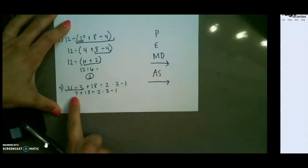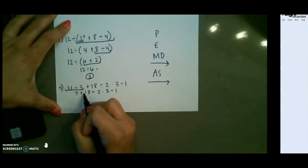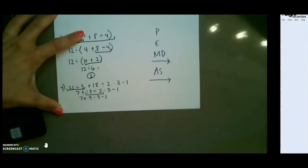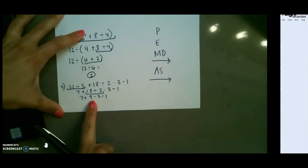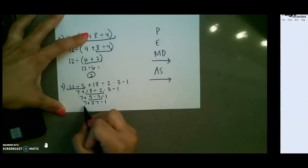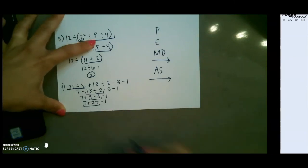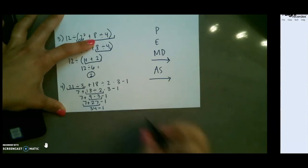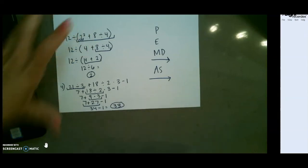I then go to the next multiplication and division, which is 18 divided by 2. I still have one more multiplication left, and now I have all addition and subtraction. 7 plus 27, and then 34 minus 1, which gives us 33 as our final answer.